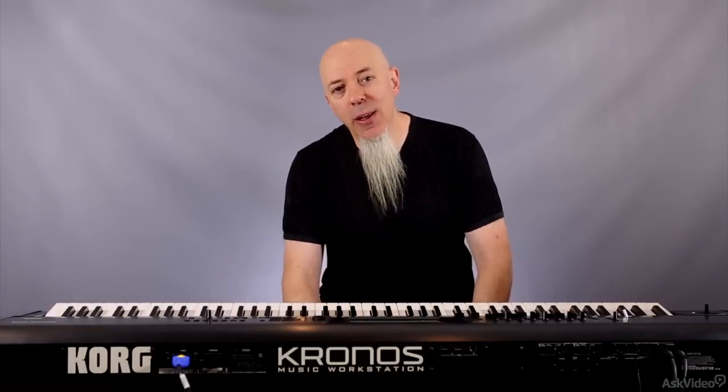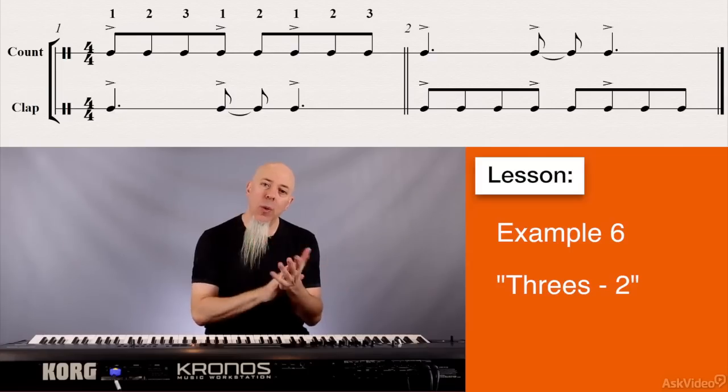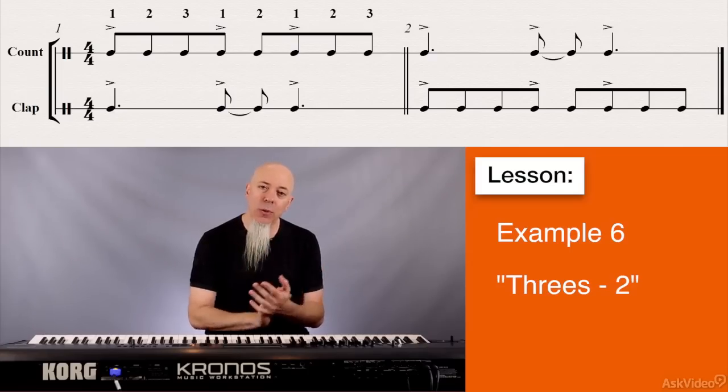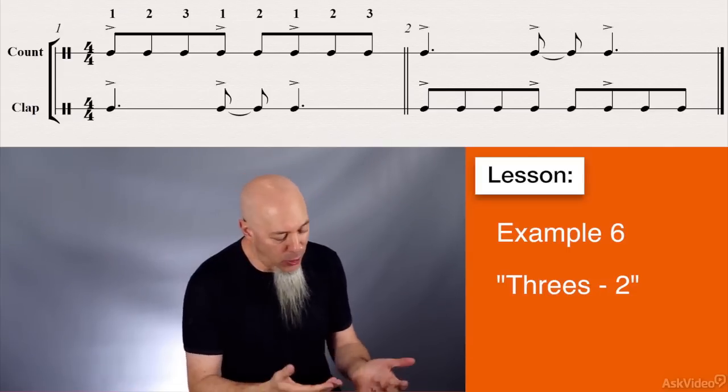Maybe you want to take something like a three, a two, and a three — so it would be: one two three, one two, one two three. If you clap that as an exercise it would be like: one two three, one two, one two three, one two three, one two, one two three.